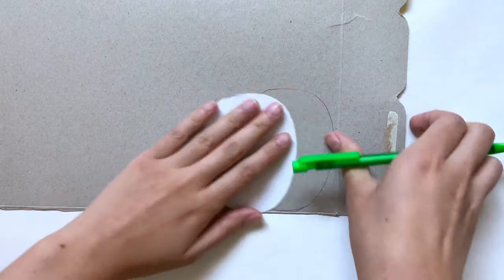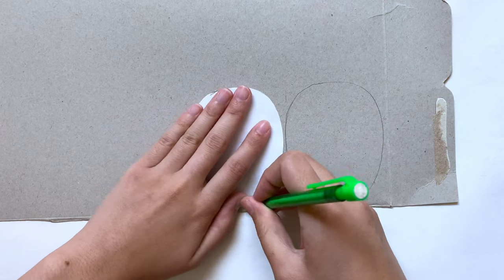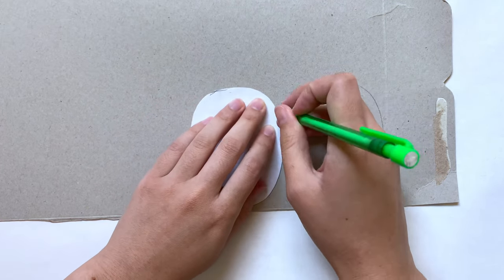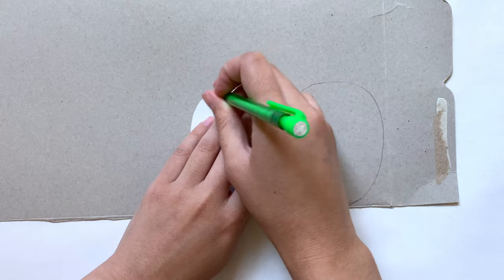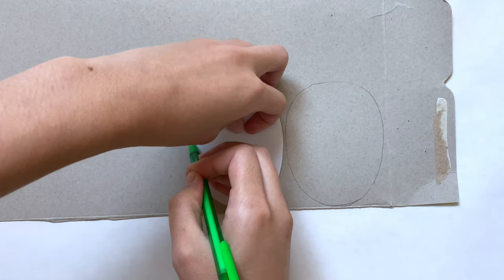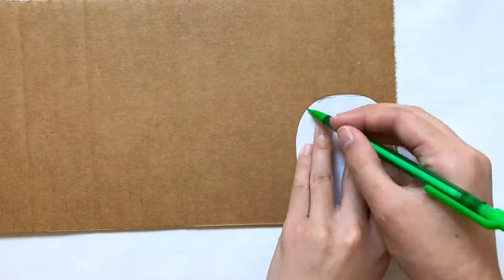I'm first going to be tracing this on some thin cardboard. I was originally planning on cutting out a bunch of these and just stacking them, but I soon realized I'd probably need about ten of these to get the size I wanted, so I just switched over to some regular corrugated cardboard.